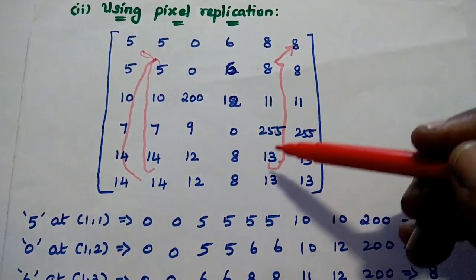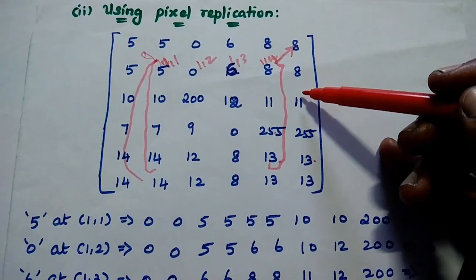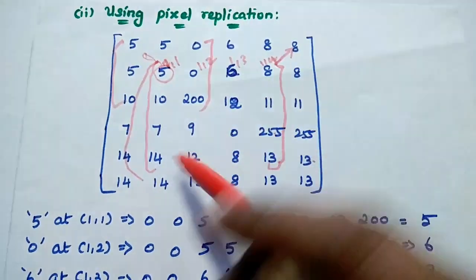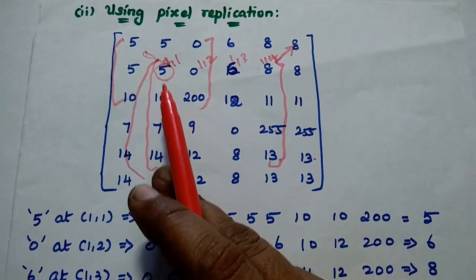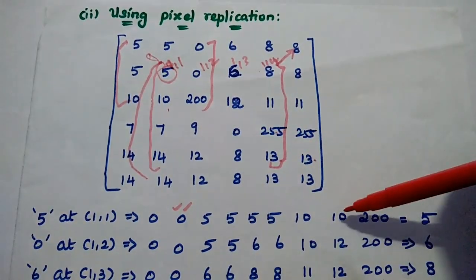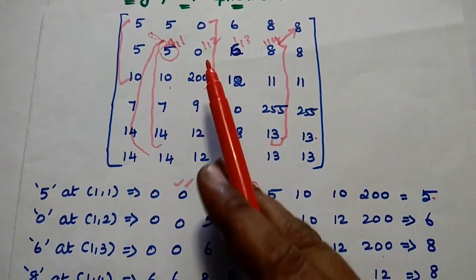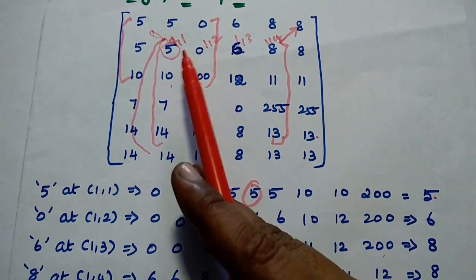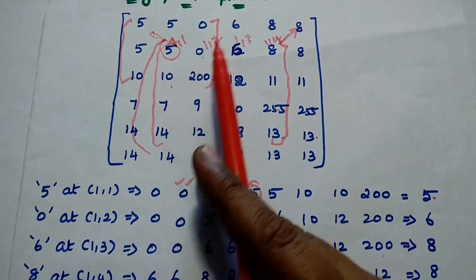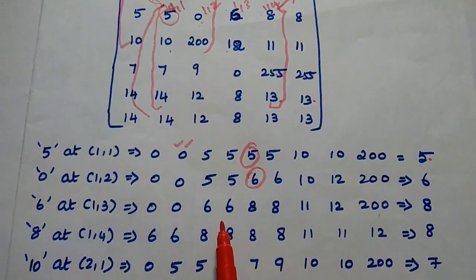We are going to consider only the given image segment starting from position 1,1. For pixel value 5, using the 3x3 median filter concept on the neighboring pixels, there are 2 zeros and 4 fives, then 2 tens and 200. The median value is 5. For the second pixel value 0, within the 3x3 window the neighboring values are 2 zeros, 2 fives, 2 sixes, 10, 12, 200. The median value is 6. So 0 can be replaced with the value 6.